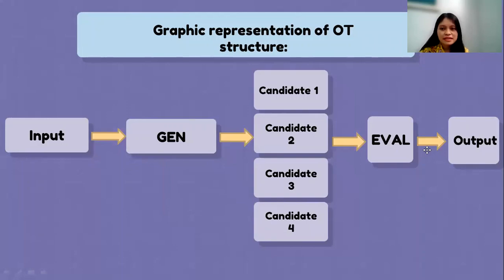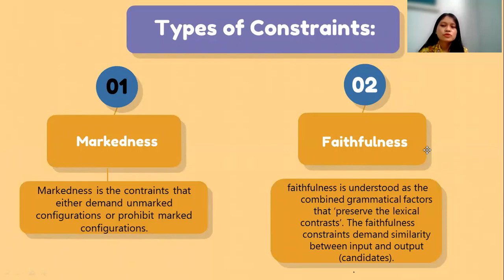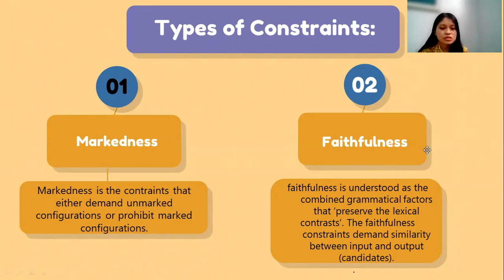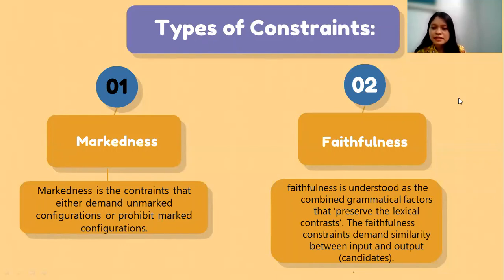There are two types of constraints in OT. The first is markedness — constraints that either demand unmarked configurations or prohibit marked configurations. The second is faithfulness. Faithfulness is understood as the combined grammatical factors that preserve lexical contrasts. Faithfulness constraints demand similarity between the input and output, or the candidates.